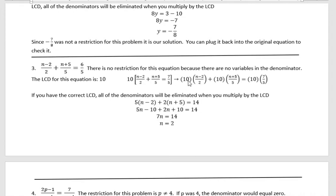2 goes into 10 five times. So notice I had to take 5 times the entire numerator n minus 2. Over here 5 goes into 10 twice, so it's 2 times that numerator n plus 5. And finally over here 5 goes into 10 twice, and 2 times 7 is 14.